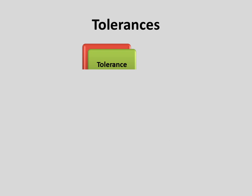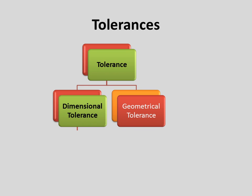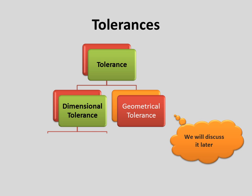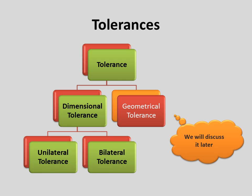Hello friends, today we will learn types of tolerance used in manufacturing process. Tolerance is broadly classified into two categories: Dimensional Tolerance and Geometrical Tolerance. Geometrical Tolerance we will discuss later in an upcoming video. Now Dimensional Tolerance is classified into two categories, i.e. Unilateral Tolerance and Bilateral Tolerance.